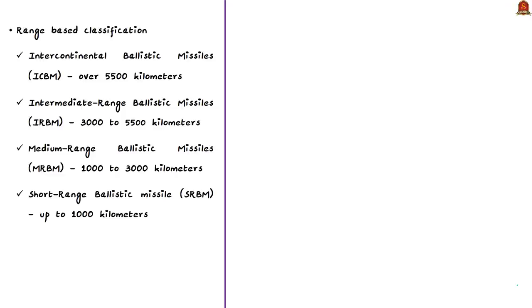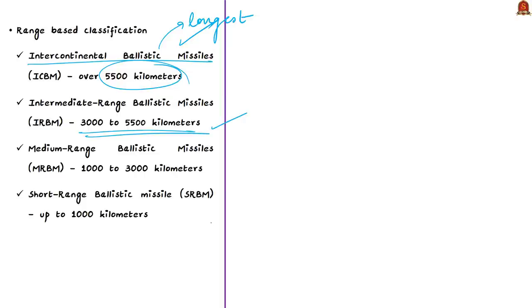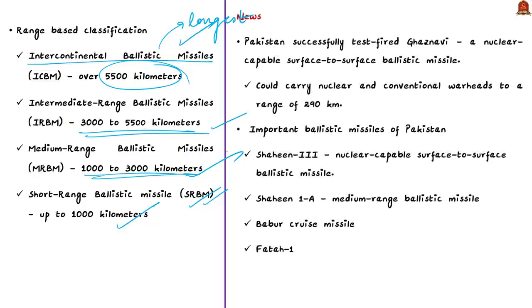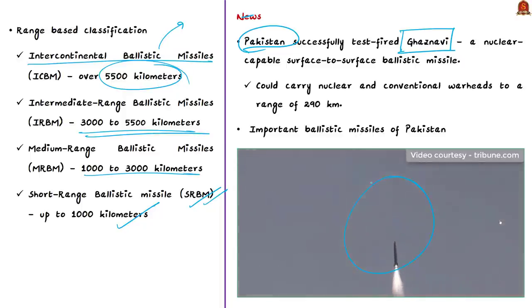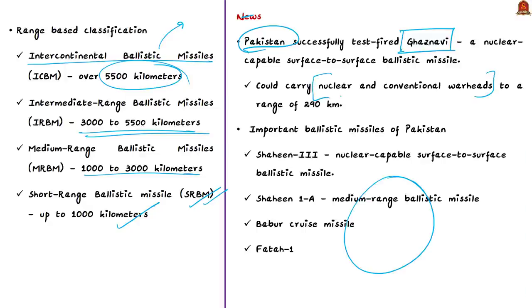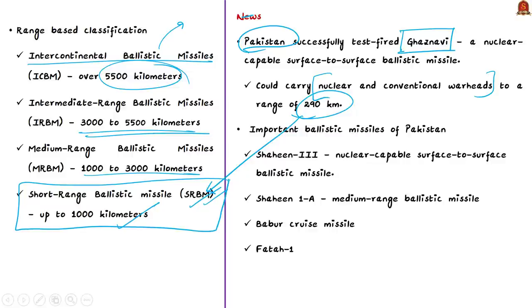Ballistic missiles are divided into four range classes: Intercontinental Ballistic Missiles (ICBM) with range over 5,500 km; Intermediate Range Ballistic Missiles (IRBM) with range 3,000–5,500 km; Medium Range Ballistic Missiles (MRBM) with range 1,000–3,000 km; and Short Range Ballistic Missiles with range up to 1,000 km. Pakistan's Ghaznavi is a nuclear-capable surface-to-surface ballistic missile capable of delivering multiple types of warheads, with a range up to 290 km — making it a short range ballistic missile.